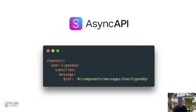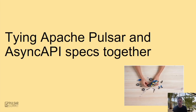A single channel called UserSignedUp, which is a subscribed channel meaning that consumers should pull from that channel. Now that everyone writes AsyncAPI specifications to document their asynchronous APIs, this leads us to the main event — what we've built in between the specifications and Pulsar. So what we built is a platform that takes AsyncAPI specifications and uses them to configure Pulsar so that it lives up to that specification. We call this AMA.